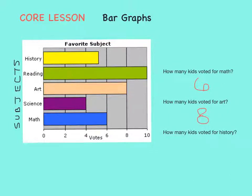And finally, what about history? Well, here's history on the bar graph. It has a yellow bar next to it and it goes all the way to the... wait a second, this one's halfway between two lines. It's halfway between the four and the six. Well, we know halfway between four and six is five. So five students voted for history as their favorite subject.